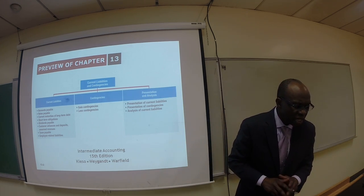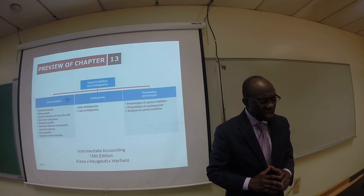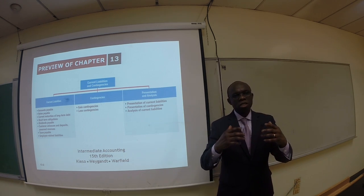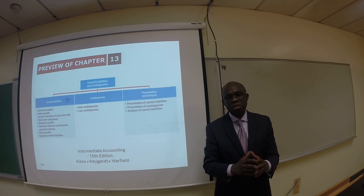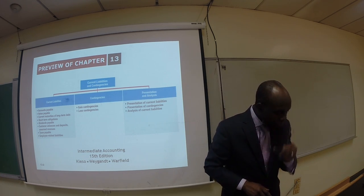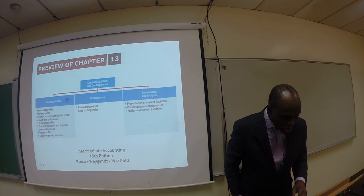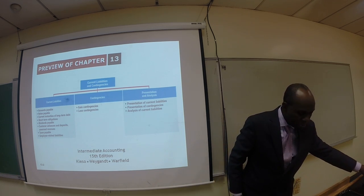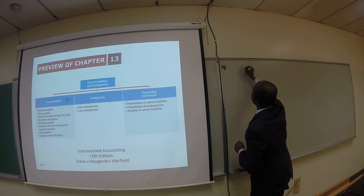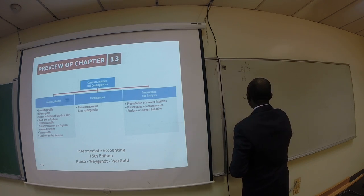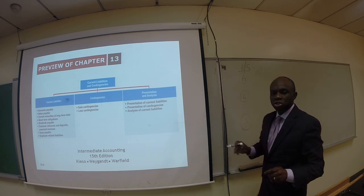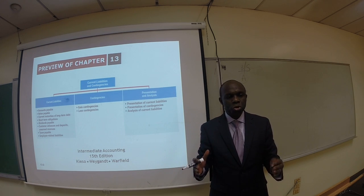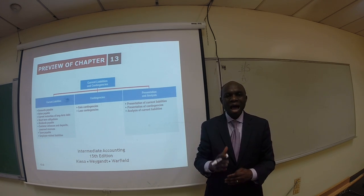In Chapter 13, we are going to learn the accounting principles and their applications specifically as they relate to current liabilities and contingencies. Current liabilities and contingencies are reported on the balance sheet. The balance sheet consists of assets, liabilities, and stockholders' equity, and it is a financial statement that shows the financial condition of a company at a point in time.